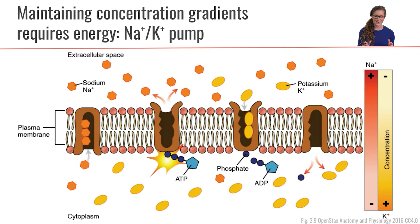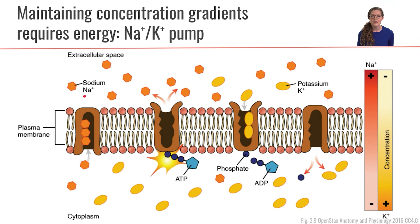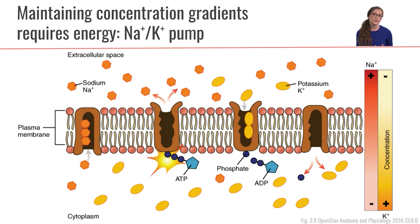One more thing to emphasize about concentration gradients: sometimes cells want to deliberately create concentration gradients so that those gradients can drive other processes. One very important — some may say the most important — transporter in cell membranes is a pump that functions to maintain different concentrations of ions across the cell membrane. This is the sodium-potassium pump.